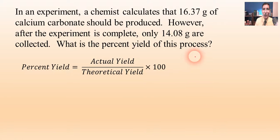So the actual yield is the 14.08 grams, and we know that because it says that's how much are collected. That's how much we really actually produce. The theoretical yield, well, that's the 16.37 grams, because that's the calculation that should be produced. So that goes in the denominator. Now we just multiply that by 100. And on the calculator, we get an answer of about 86.01%. So usually, percent yield can be a very simple calculation.